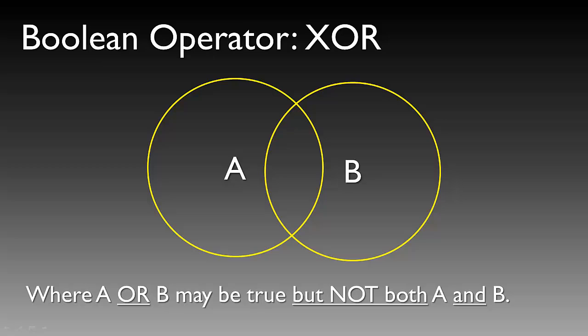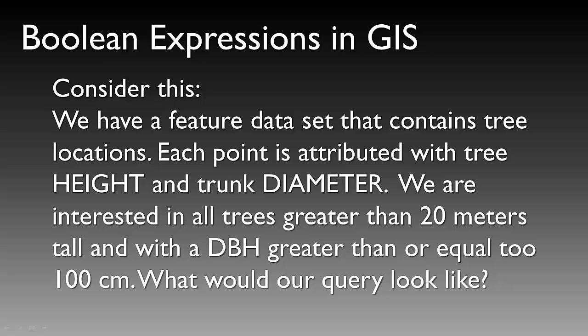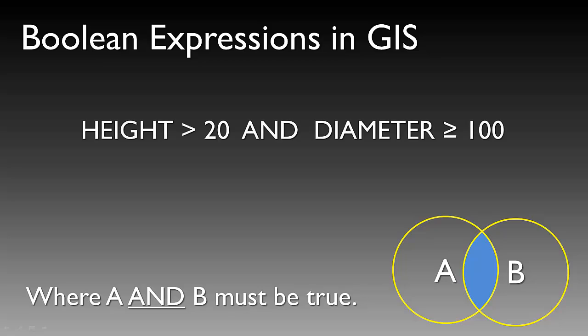And finally, the operator XOR, where A OR B may be true, but NOT A AND B. This means that we are going to have a hole in the middle where the two overlapping polygons exist. So A or B may be true, but not both A and B. Consider this: we have a feature data set that contains tree locations. Each point is attributed with tree height and trunk diameter. If you are interested in all trees greater than 20 meters tall and with a DBH, or diameter at breast height, greater than or equal to 100 centimeters, a simple query would be: height greater than 20 AND diameter greater than or equal to 100, using the AND Boolean operator to locate features where both conditions are true.